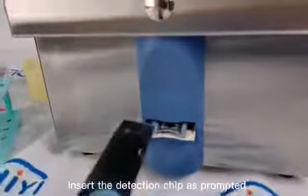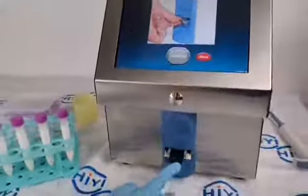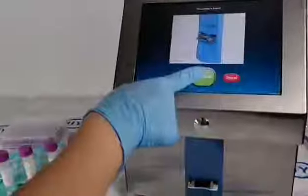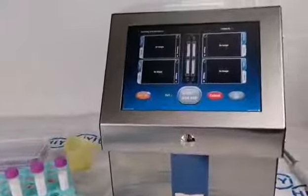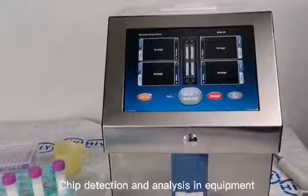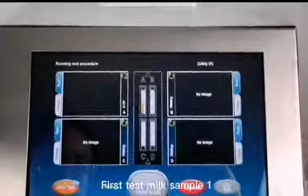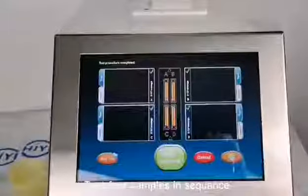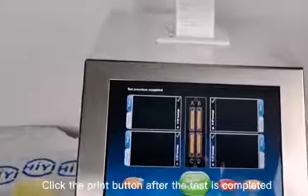Insert the detection chip as prompted. Click the continue detection button. Chip detection and analysis in equipment. First test milk sample one, then test samples in sequence. Click the print button after the test is completed.